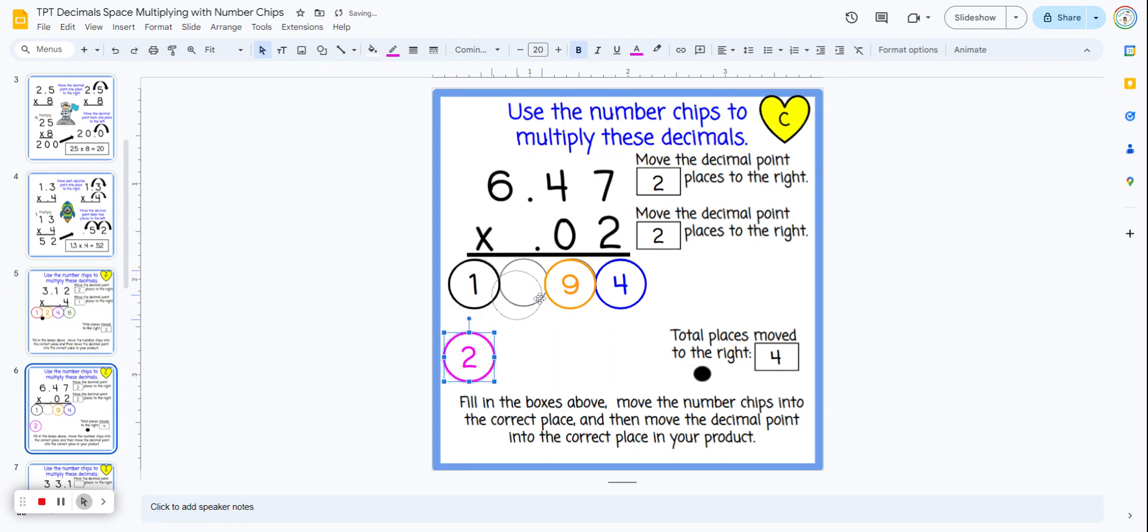And then we don't need to multiply with the 0. Now we're going to move that decimal point back four places to the left, 1, 2, 3, 4, and we get our answer.